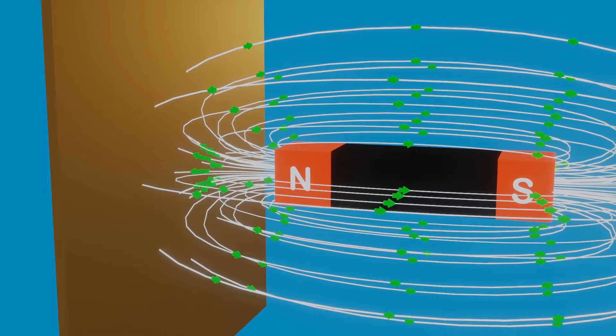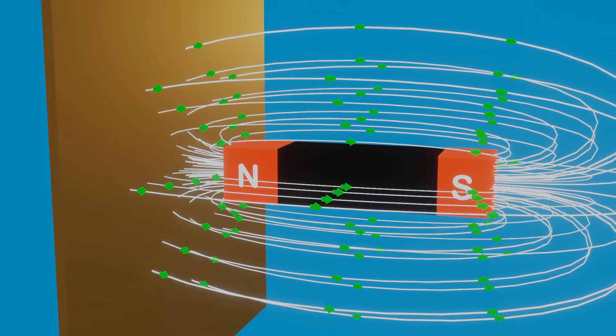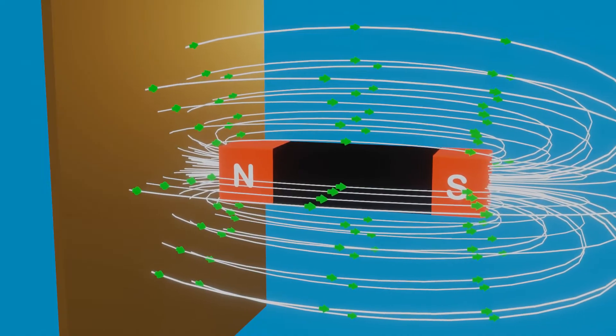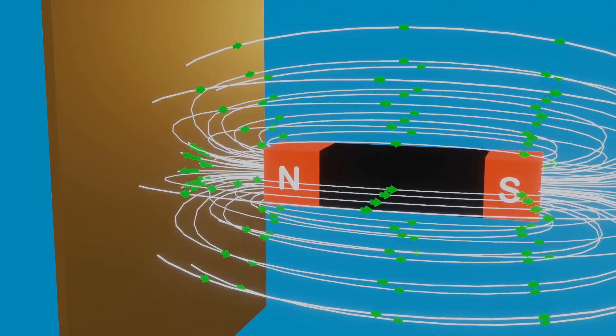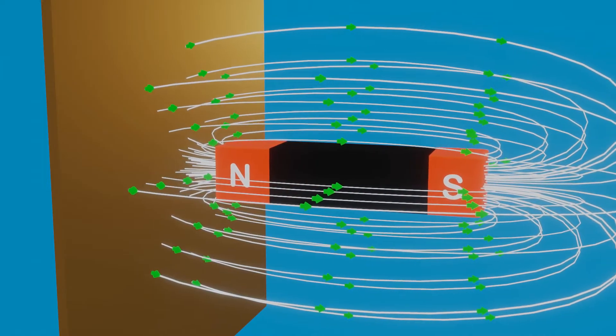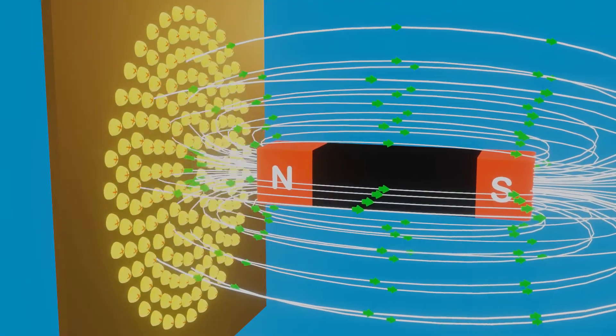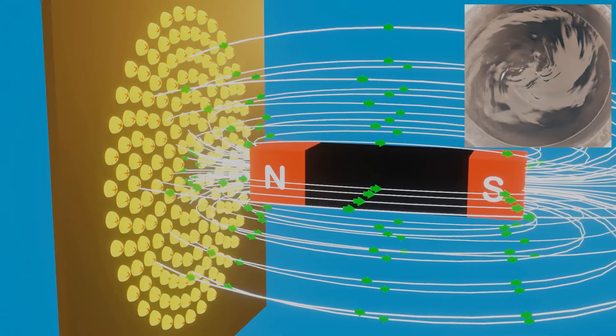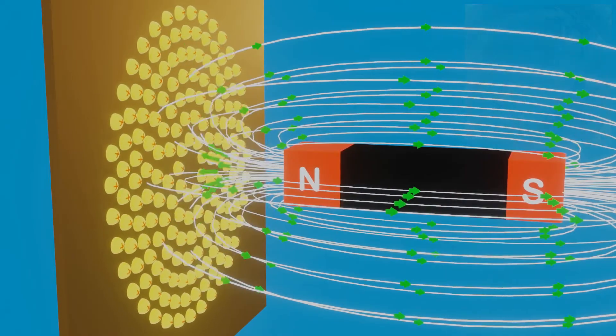When we move the bar magnet, magnetic flux passing through the conducting plate changes. As this time, here it is not a closed loop. Therefore, charges present in the conducting plate start flowing in a circular loop like swirling eddies in water. And these currents are called eddy current.